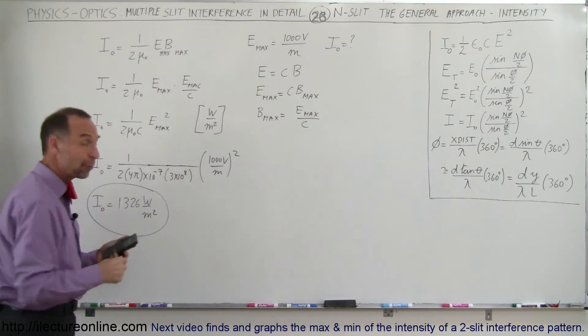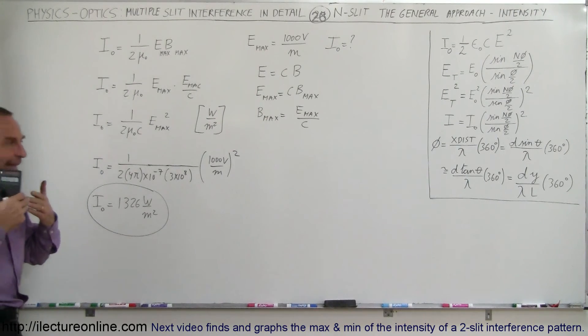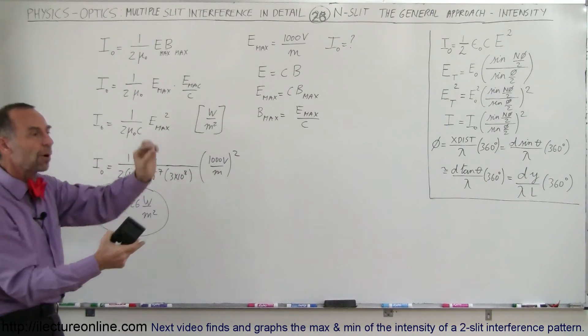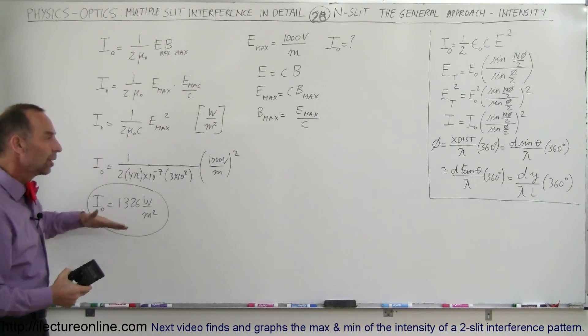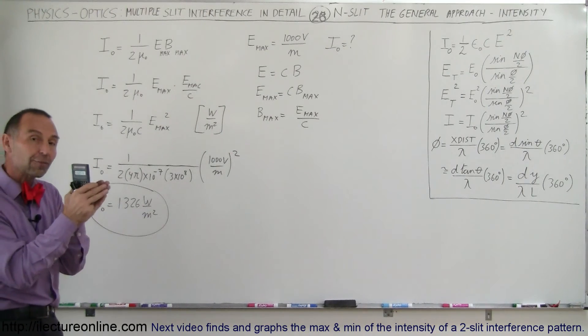So now we see how we can actually find I sub nought. I sub nought is simply a function of the intensity of the radiation that enters the slits. And then when they all interfere with one another, we want to find the intensity in terms of I sub nought. And usually, when we have multiple slits, and we're close to the central maximum, or close to one of the maximum, then we can see that it's very high intensity.